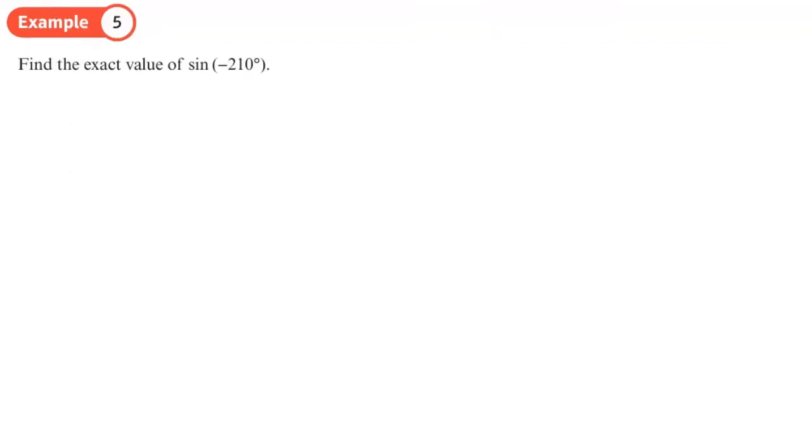Find the exact value of sine negative 210 degrees. First thing, what's this equivalent to? So 0, 90, 180, 270. Negative 210, well this is the same as negative 180. So negative 210 is going to be here, which means that this is 30 degrees.